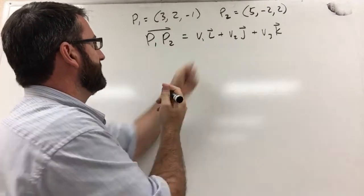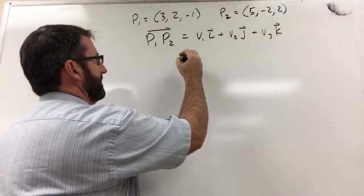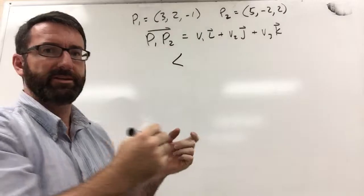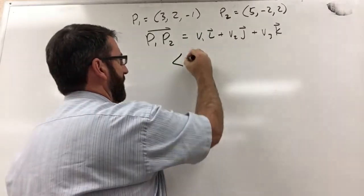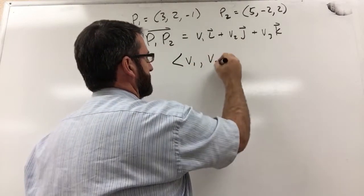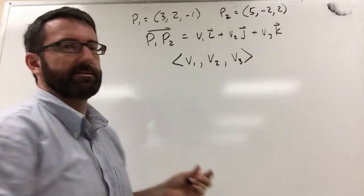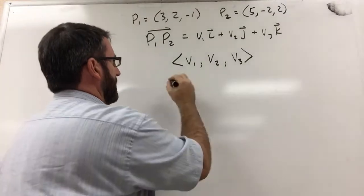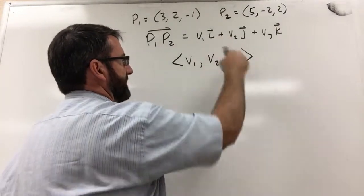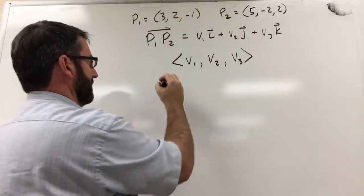So this v1, v2, v3, these are the same v1, v2, v3 that we would find in component form. Remember our component form just looks like this. And this is the same thing. So these are the same v1, v2, and v3 that we use in component form.